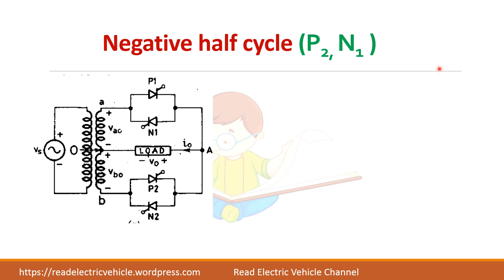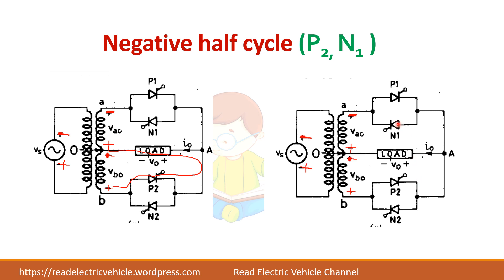During the negative half cycle, P2 and N1 are alternately turned on and off. With minus at the top and plus at the bottom, N1 can be turned on and P2 can be turned on. When P2 is on, current flows from A to O; when N1 is on, current flows from O to A. Remember that thyristors are unidirectional devices — current always flows from anode to cathode.